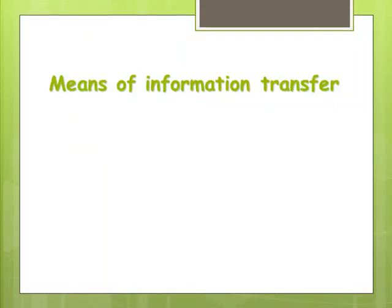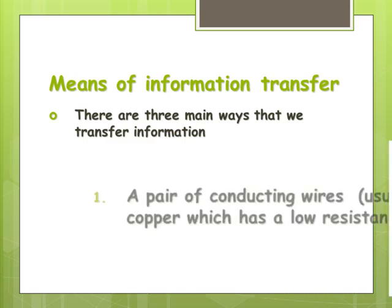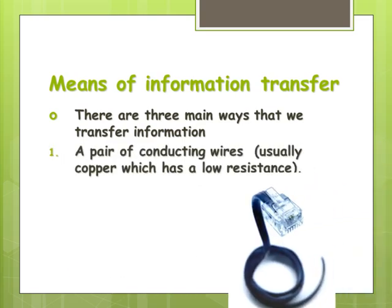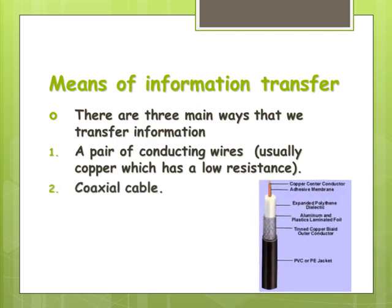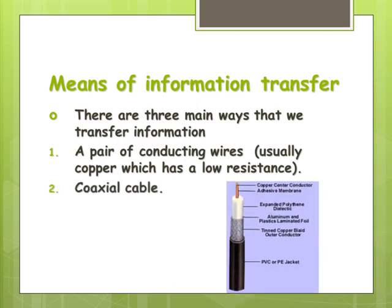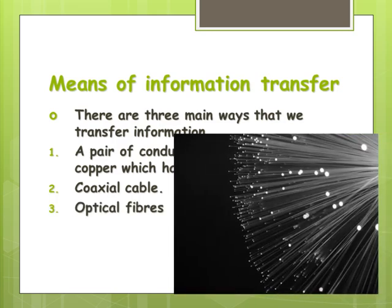We're looking at how we transfer information, and currently we probably have three main ways that we do so. First is a pair of conducting wires, usually copper because of its low resistance and relatively cheap cost, as in your telephone wires. Second is coaxial cable, which is what you would plug in as part of your antenna to the back of your TV. And third is optical fibers.